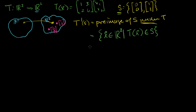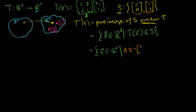Now what is another way of writing this? We're looking for all of the X's in our domain such that A times X is a member of S. So that means A times X has to equal the zero vector, or A times X has to equal the vector (1, 2). This is the same statement, just made more explicit in terms of our transformation A times X and what our actual set is — just two vectors.